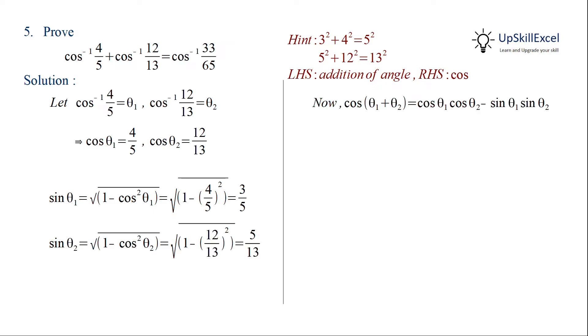Now we can substitute these values in cos of theta 1 plus theta 2 formula and get 33 by 65.